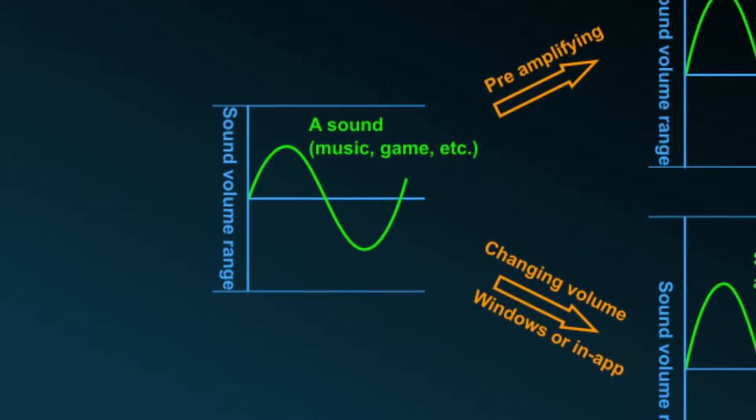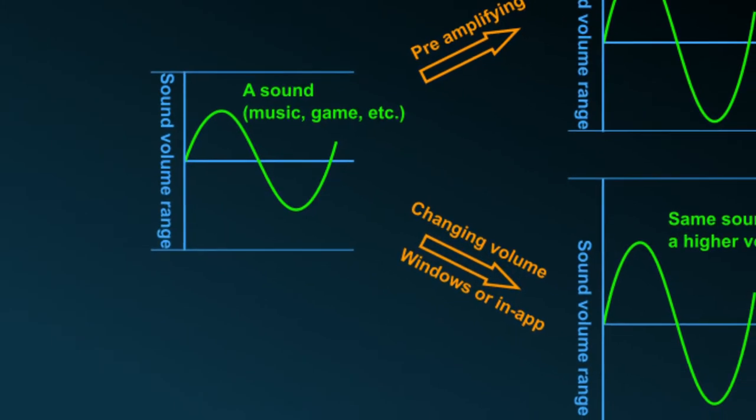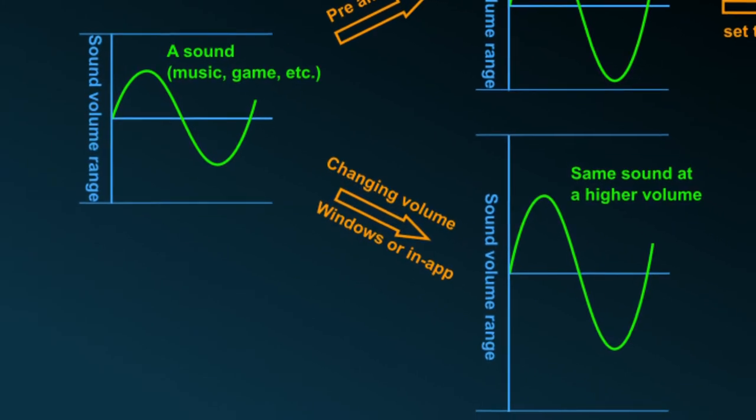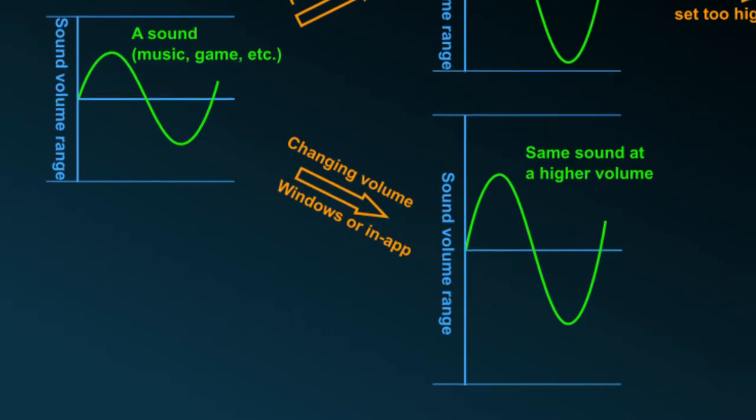A sound has a range limited by a maximum and a minimum value in which it can have its loudness expressed. When you increase the Windows volume, the sound isn't increased within this range. Rather the whole range, including the sound, is increased, or better said, amplified.